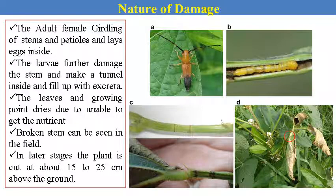Nature of damage: The adult female girdles the stem and petioles and lays eggs inside. The larvae further damage the tissue of the stem, making a tunnel filled with excreta. The leaves and growing points dry due to inability to receive nutrients. Broken stems can be observed in the field even while podding is going on. The podding stage is also affected very seriously. The plant is cut at about 15 to 25 cm above the ground and the stem breaks off — this is a very major pest in Vidarbha and Maharashtra.